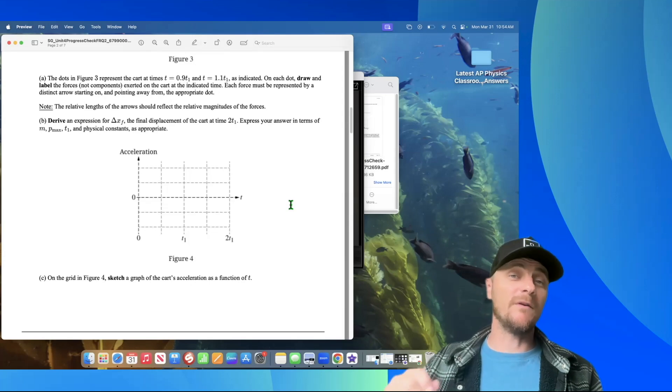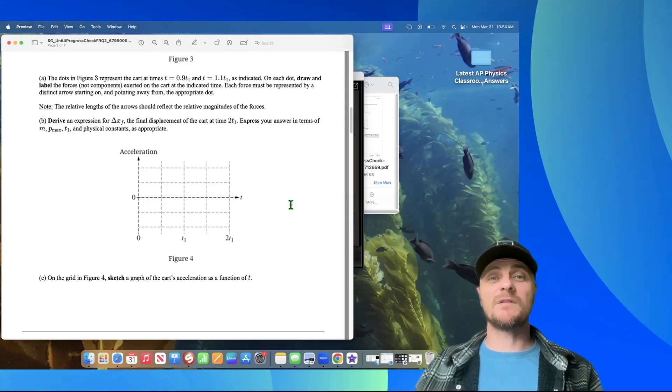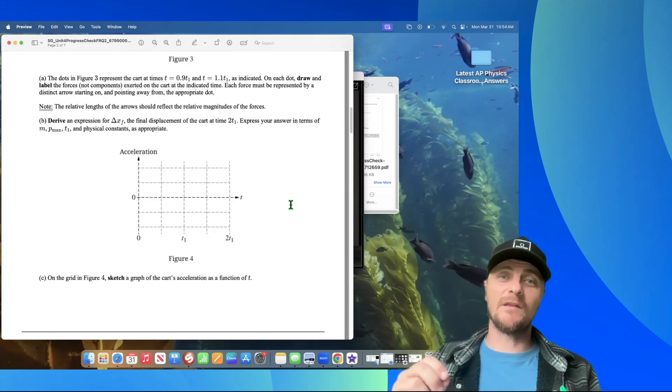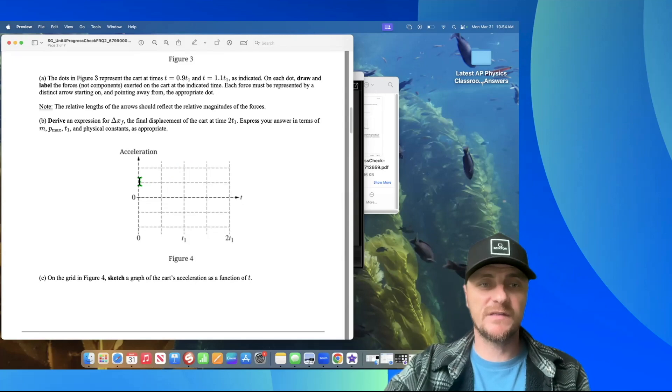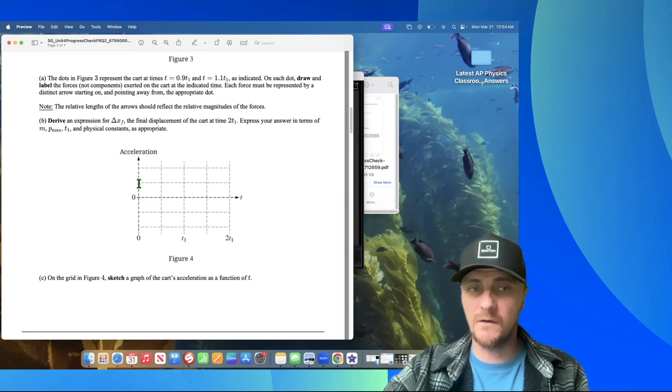Then from t1 to 1.5 t1, we had a net force that was twice as big, but acting in the negative direction. Acceleration is directly proportional to net force. Therefore, we would have some positive acceleration. Let's go one box tall and take that straight line all the way across to t1.